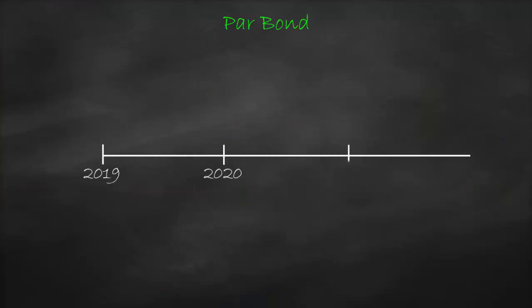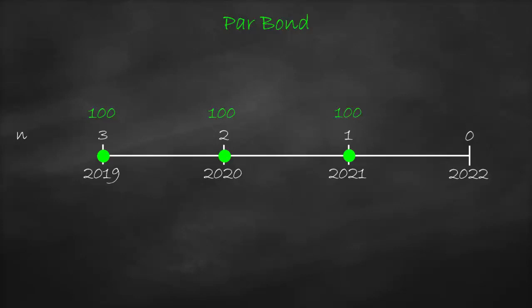If we draw this graphically for a par bond: in 2019 (N=3), bond price is 100. In 2020 (N=2), it is 100. In 2021 (N=1), it is 100. In 2022 (N=0), it is 100. Therefore, the bond price of a par bond is always constant at 100, equal to face value every year until it reaches maturity.